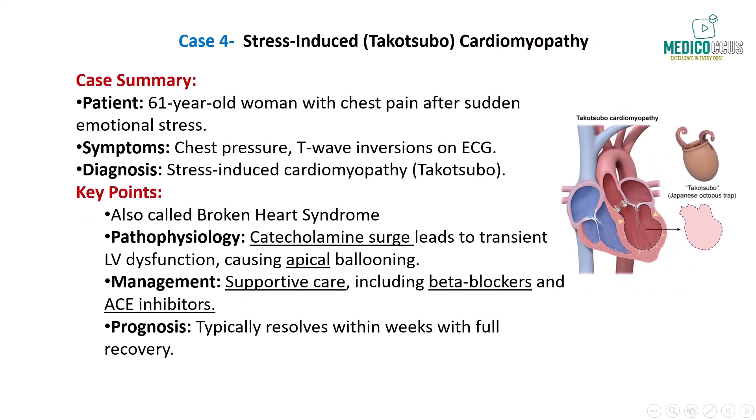Finally, let's discuss a 61-year-old woman who presents with chest pressure and shortness of breath following the sudden death of her husband in a car accident. Her ECG shows T-wave inversions in the anterior leads, and echocardiography reveals hypokinesis of the apical segments with a reduced ejection fraction. Coronary angiography, however, shows no obstructive coronary artery disease. This presentation is classic for stress-induced or takotsubo cardiomyopathy, often triggered by a surge of catecholamines in response to severe emotional stress. The characteristic ballooning of the left ventricle, seen on echocardiogram, mimics the shape of a Japanese octopus trap, hence the name takotsubo.